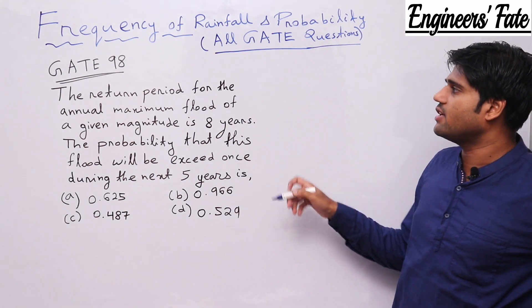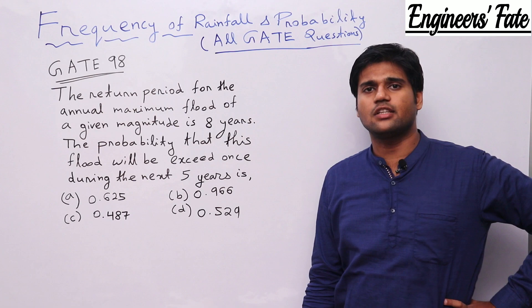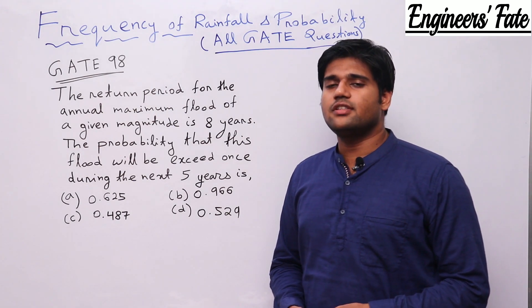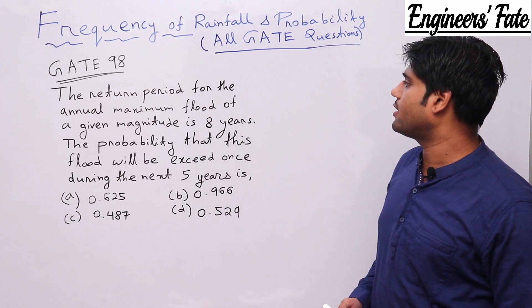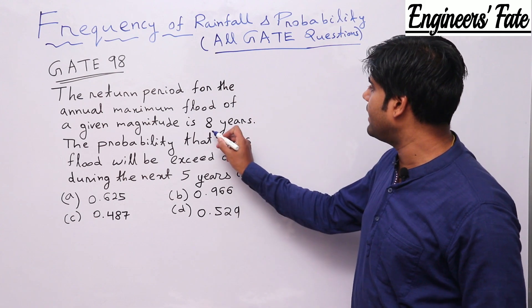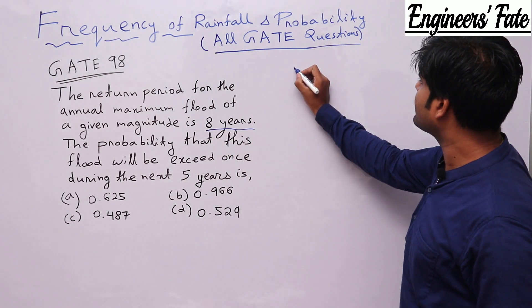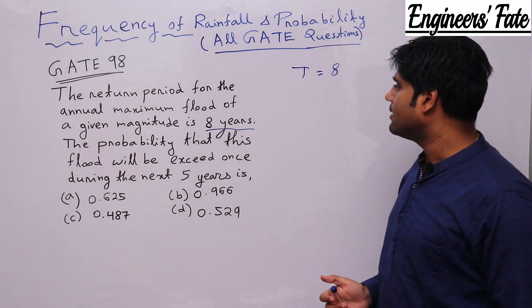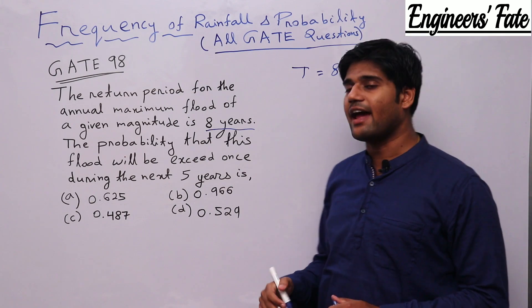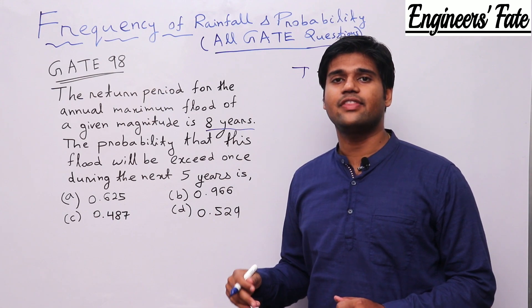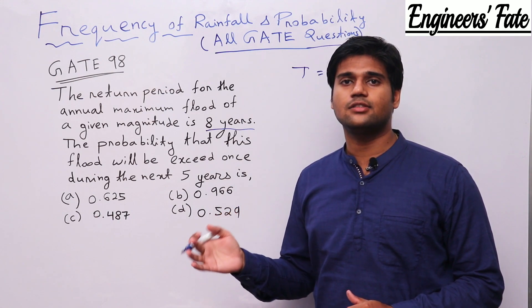So solve the question asked in GATE 98 by pausing the video. The question said that the return period for the annual maximum flood of a given magnitude is 8 years. That means he has given the return period T equal to 8. The probability that this flood will exceed once during the next 5 years. I have told if something has mentioned once in N years that means he has asked us to find risk.